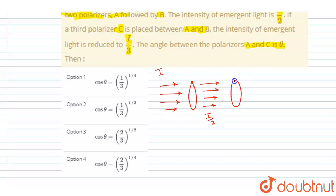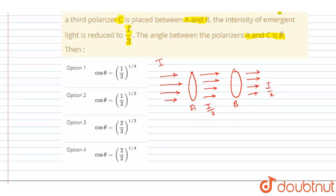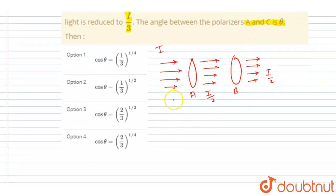Now it is said that it also passes through B and then also has the same intensity I by 2. So this situation is only valid when the angle between these two is zero degrees. A and B are parallel.